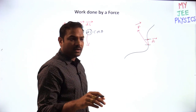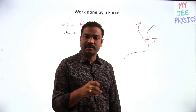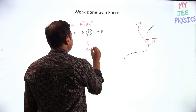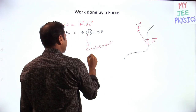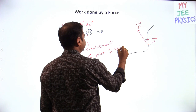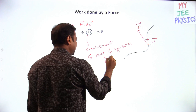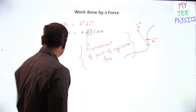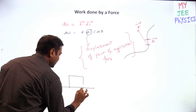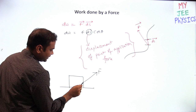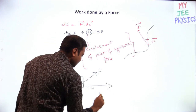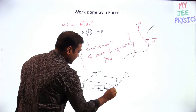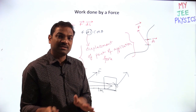One more thing: whatever this ds is, in most cases you will get a displacement of the object or displacement of the particle. But ds stands for displacement of the point of application of force. That is the meaning of ds. Suppose we are applying force here — this is the point of application. If the block is moved forward by one meter, this point of application also moves by one meter. That's why we take the displacement of the body as the displacement of the point of application.